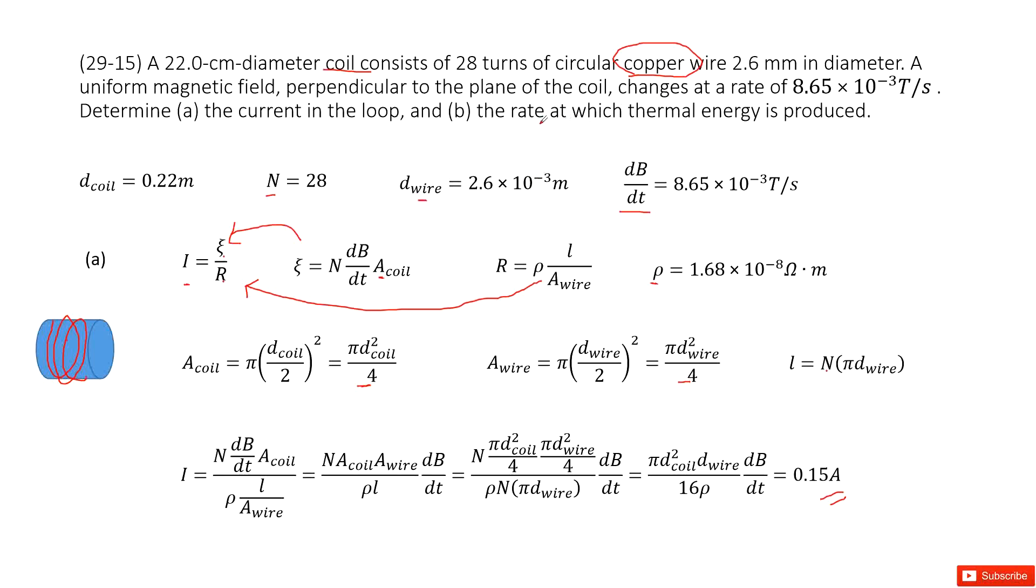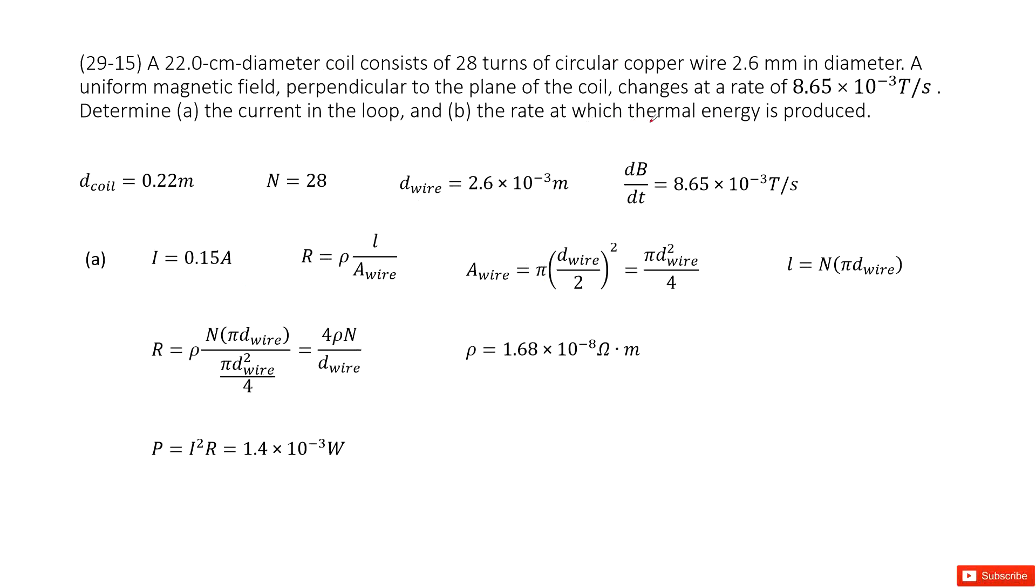Part B, the rate at which thermal energy is produced. So now we can see the thermal energy produced can be written as the current squared times R.